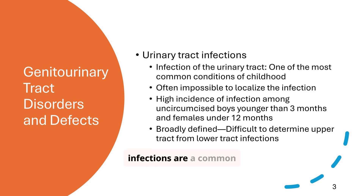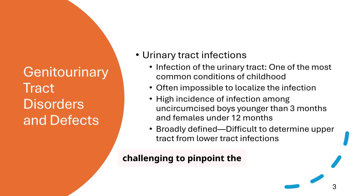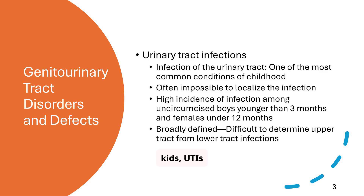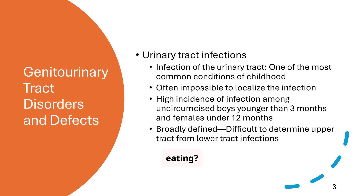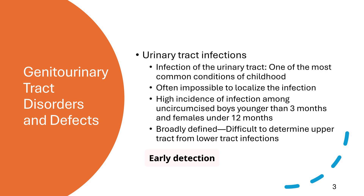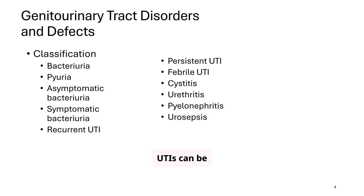Urinary tract infections are a common concern, especially in pediatric populations. It's often challenging to pinpoint the exact location of the infection. Keep in mind the higher incidence in uncircumcised infants and young females. In kids, UTIs might not always look textbook. A toddler with a fever and no clear source? Think UTI. A baby who's fussy and not eating? Could be a UTI too. Uncircumcised baby boys and young girls under 12 months are more prone. Early detection means less kidney damage.